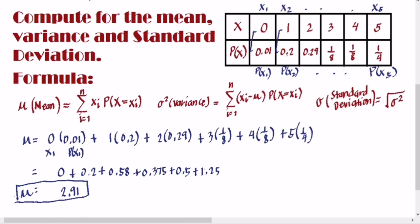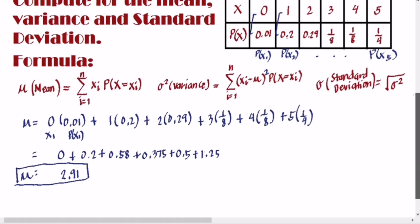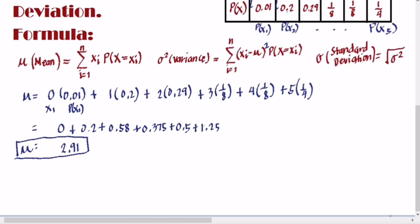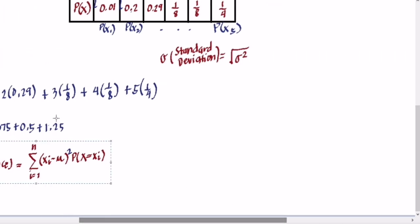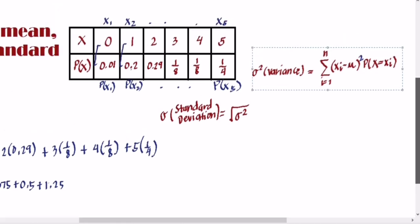Now let's get the variance. The formula is: summation of (x sub i minus the mean), squared, times P(x equals x sub i). We need the mean we just computed, which is 2.91. For each x value, we subtract the mean, square the result, and multiply by the corresponding probability, then sum everything up.